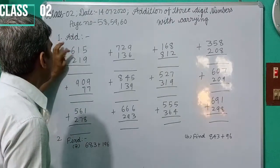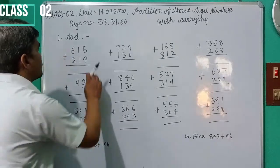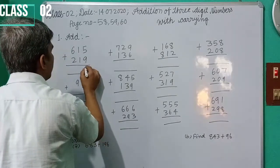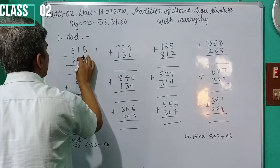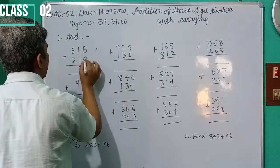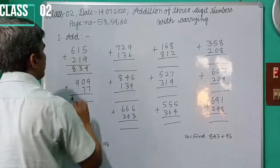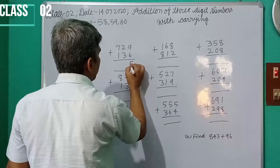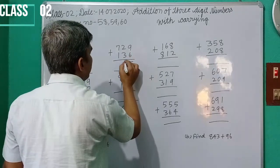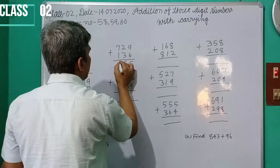Add 615 plus 219 equals 834. Then 999 plus 97 equals, write 6 in ones place with carry 1, then 9, 9, 19. Then 561 plus 278. In this way you find out answers.